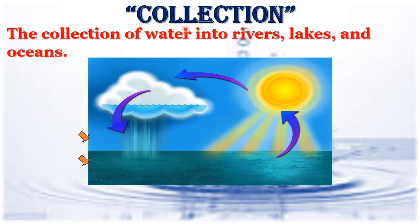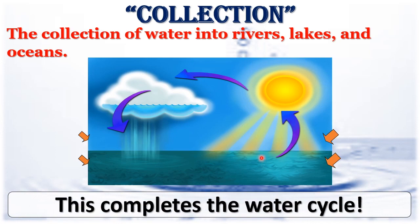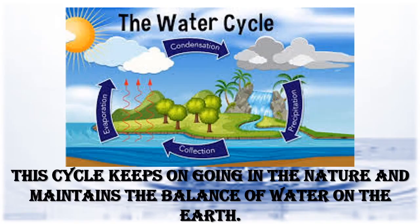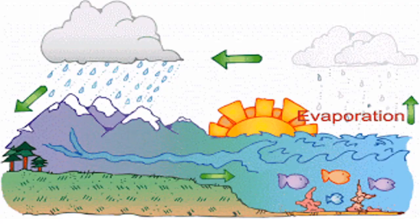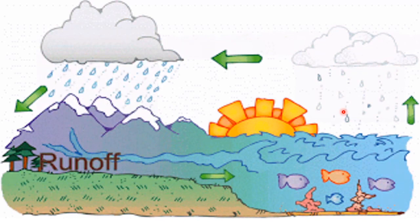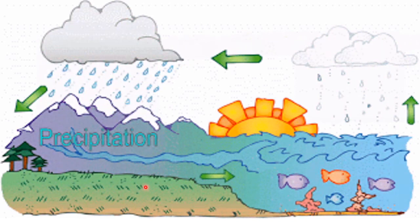This completes the water cycle. This cycle keeps going in nature and maintains the balance of water on the earth. As you can see, water evaporates, then condenses, and comes down in the form of precipitation and is again collected back in rivers and oceans. This process goes on continuously in nature, changing the form of water from one to another.